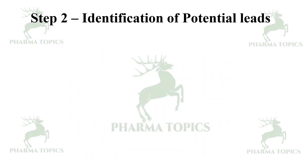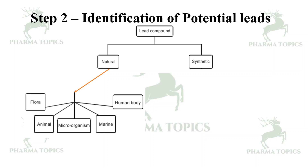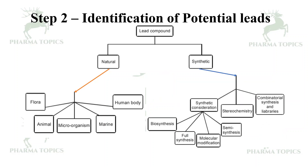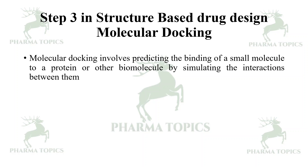Step 2 is identification of potential leads. Lead molecules may come from natural sources — including microbial flora, animals, marine sources, or metabolites of human origin — or from synthetic sources such as biosynthesis, full synthesis, molecular modification, semi-synthesis, stereochemistry, combinatorial synthesis, and database libraries.